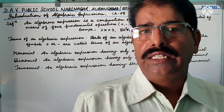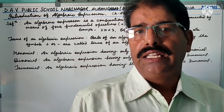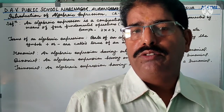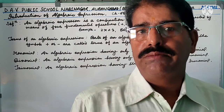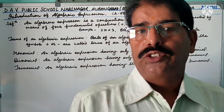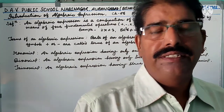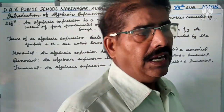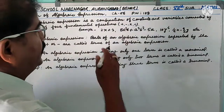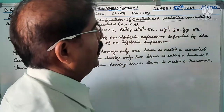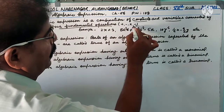In the previous class, that is in class 6, we learned about algebraic expressions and terms of an algebraic expression such as monomial, binomial, and trinomial. So again, we will revise the topic of algebraic expression. An algebraic expression is a combination of constants and variables connected by means of the 4 fundamental operations: plus, minus, multiply, and divide.